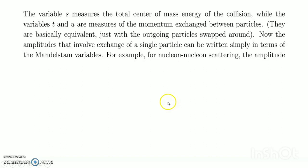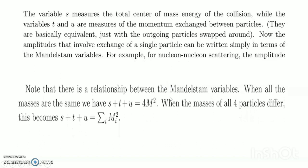Amplitudes involving exchange of a single particle can be written simply in terms of Mandelstam variables. For nucleon-nucleon scattering, the amplitude is proportional to (t − m²)⁻¹ + (u − m²)⁻¹. For nucleon-antinucleon scattering, it involves t-channel and s-channel diagrams. Note the relationship: when all masses are the same, s + t + u = 4m². When the masses of all four particles differ, s + t + u = Σmᵢ².